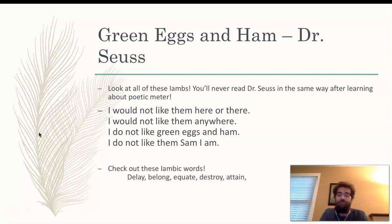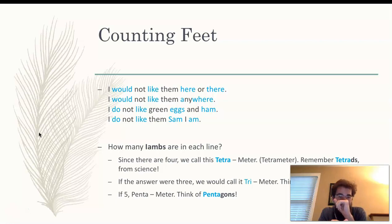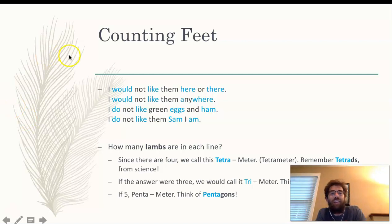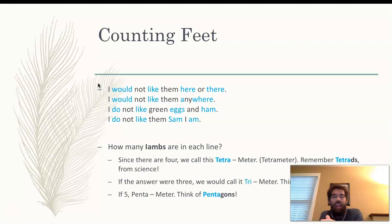I've highlighted in blue text the words where the emphasis falls, and I've shown you that it's iambic because it doesn't start with a blue word. 'I would' — it lands on 'would' and 'would' is emphasized. 'I would not like them here or there, I would not like them anywhere' — you have two emphases in that one word 'anywhere.' 'I do not like green eggs and ham, I do not like them, Sam, I am.'